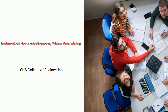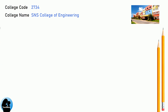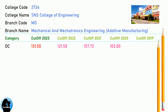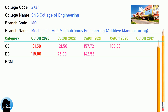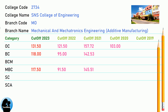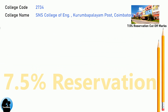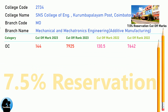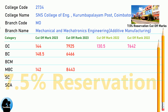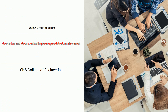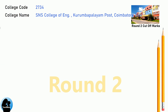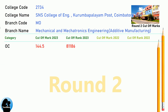DNA Cut-Off for ASNS College of Engineering in Mechanical and Mechatronics Engineering Additive Manufacturing. DNA 7.5 Reservation Cut-Off for ASNS College of Engineering in Mechanical and Mechatronics Engineering Additive Manufacturing. DNA Round 1 Cut-Off for ASNS College of Engineering in Mechanical and Mechatronics Engineering Additive Manufacturing.